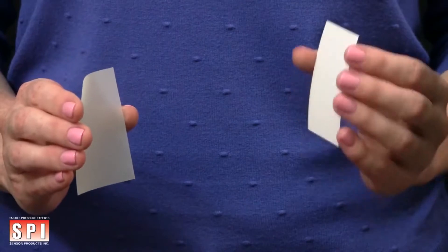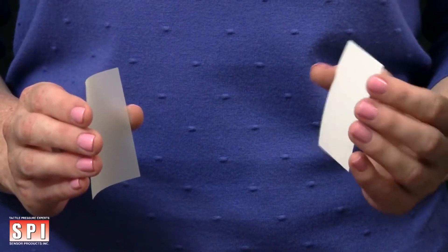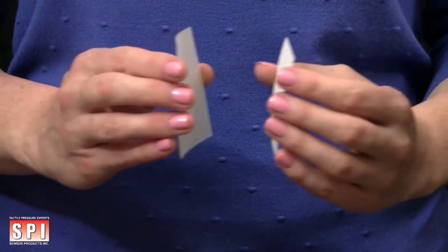Take the donor and receiver sheets you have cut and gently place them together so that the textured side of the donor sheet and the textured side of the receiver are in direct contact with one another.